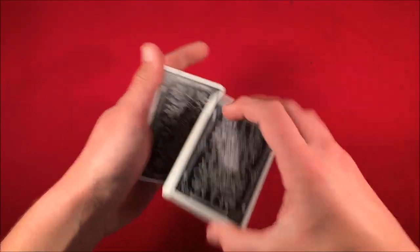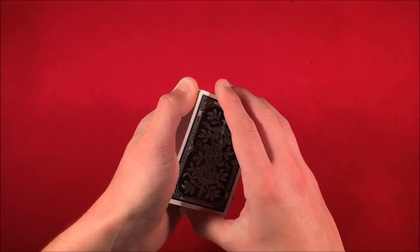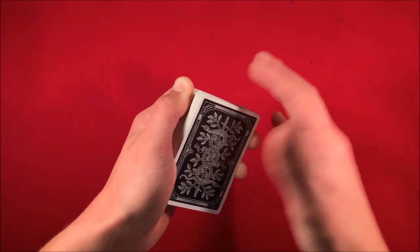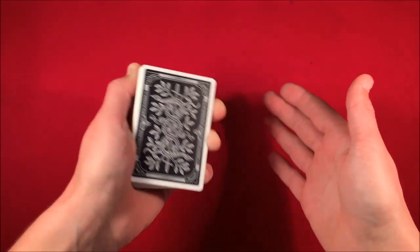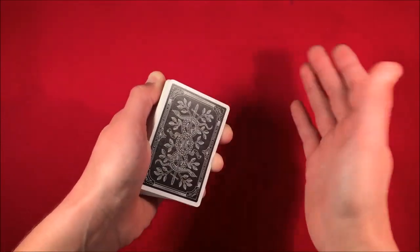So the card itself doesn't actually matter. So let's say you go here, and you riffle down, and wherever they say stop, you can ask them, would you like them to stop here or keep going? And you do this just to make the spectator feel as though they have an actual choice of where you want to pick the cards up at. So let's say they say keep going.